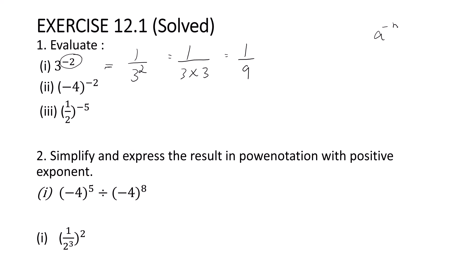We use the law: a raised to minus m equals 1 by a raised to m. Similarly, minus 4 raised to minus 2 — this also we can write as 1 by (minus 4) whole raised to 2, so this is minus 4 into minus 4, and that is 1 by 16.